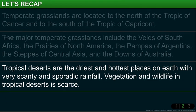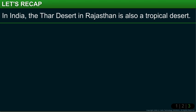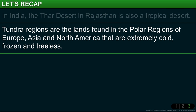Tropical deserts are the driest and hottest places on Earth with very scanty and sporadic rainfall, and vegetation and wildlife is scarce. In India, the Thar Desert in Rajasthan is also a tropical desert. Tundra regions are lands found in the polar regions of Europe, Asia, and North America that are extremely cold, frozen, and treeless.